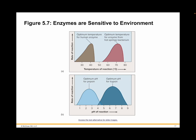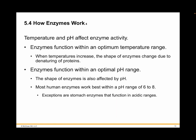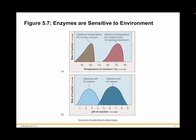Most enzymes also function within an optimal pH range, because the shape-determining polar interactions of enzymes are sensitive to hydrogen ion concentration. Most human enzymes, such as the protein-degrading enzyme trypsin — shown in the dark blue curve in figure 5.7B — work best at a pH of 6 to 8. Blood has a pH of roughly 7.35 to 7.45. However, some enzymes like the digestive enzyme pepsin — shown in the light blue curve in figure 5.7B — can function in very acidic environments such as the stomach, but cannot function at the higher pH where trypsin works best. These are the optimal conditions all enzymes have.